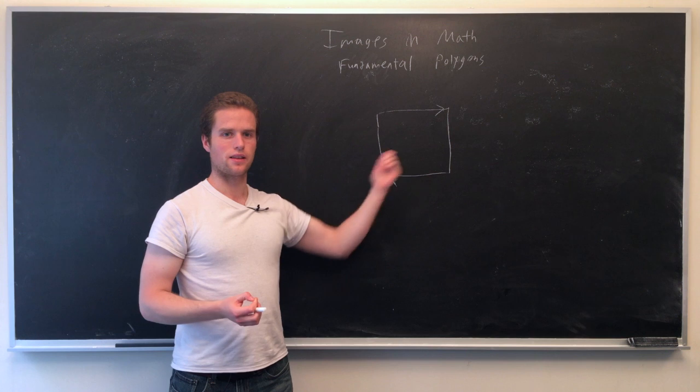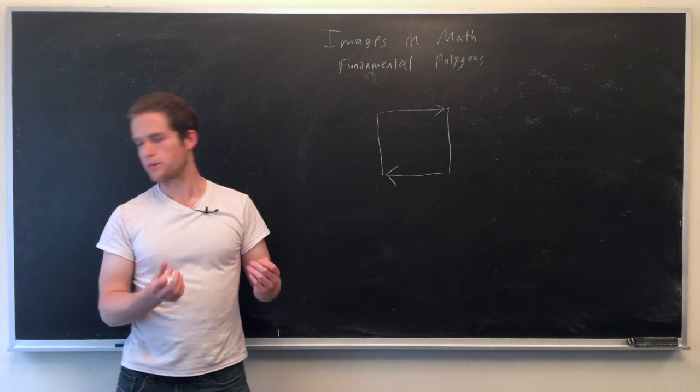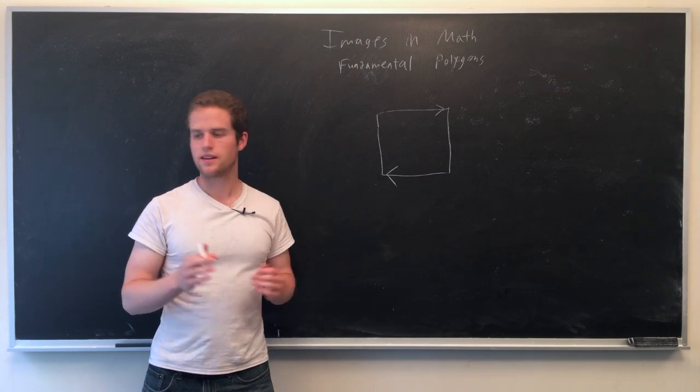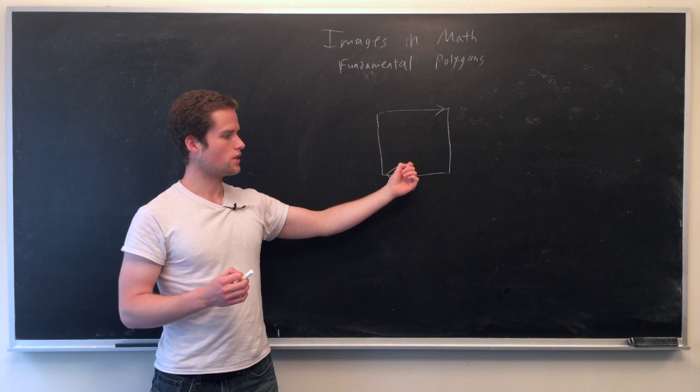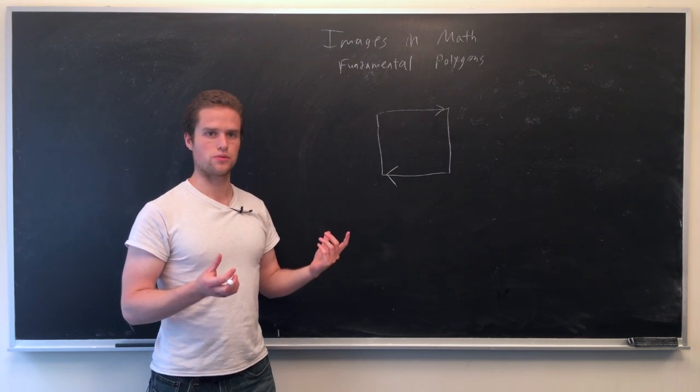Möbius strip is kind of neat, it can't be orientated. We can't really select this is that side, this is the inside side. Also, if you cut it down in the middle, you'd notice that in fact we get one loop instead of two loops.